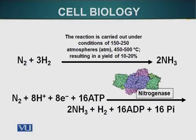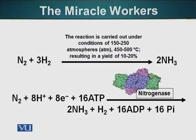Let me give you an example of this: nitrogen fixation. On the top part of the slide, we have a molecule of nitrogen with three molecules of hydrogen resulting in two molecules of ammonia. This is the Haber process, done industrially to produce ammonia.